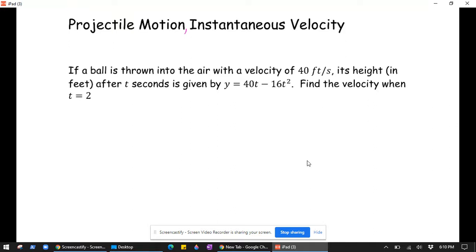We know the height is given by y. I'm going to write it in function notation. So y of t is 40t minus 16t squared. Its velocity would be the derivative of that. So v of t would be y prime of t, which is 40 minus 32t.